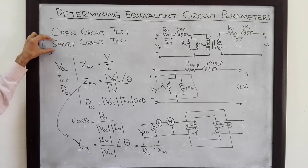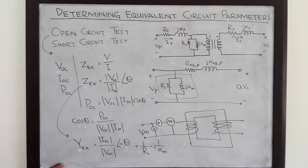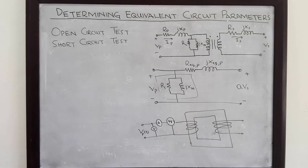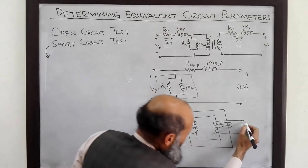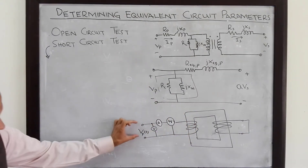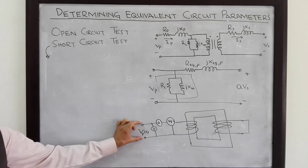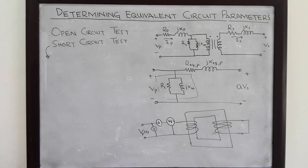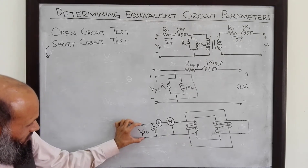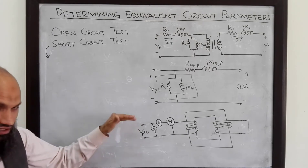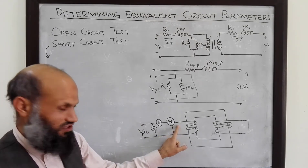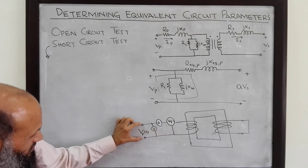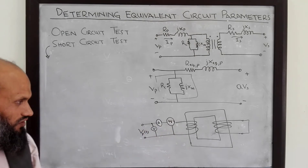The second test performed is the short circuit test. For the short circuit test, we short the secondary. However, we do not apply the rated voltage, because if we apply rated voltage, excessive current will flow through the transformer since the secondary is short circuited, and this may damage the transformer. So we apply low voltages and increase gradually until the rated current flows in the transformer.